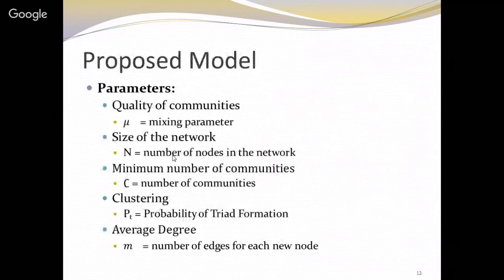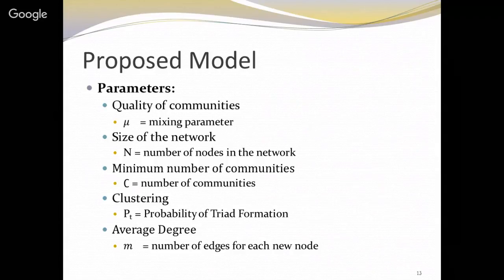Let me come to the proposed model. Before describing it, let me explain the parameters. This model uses five parameters. The first, and most important, is about the quality of communities — we name it the mixing parameter. This controls what kind of communities need to be generated in the network.